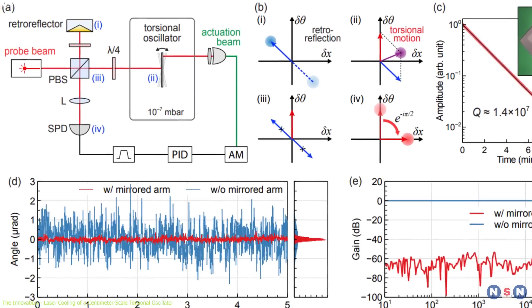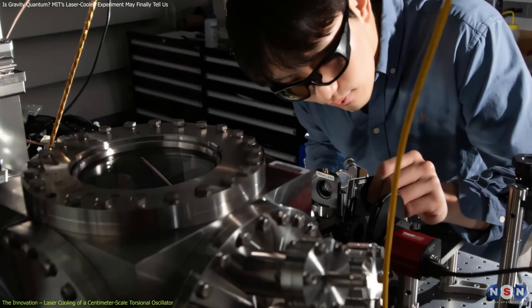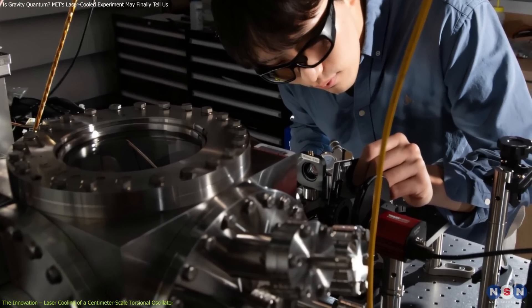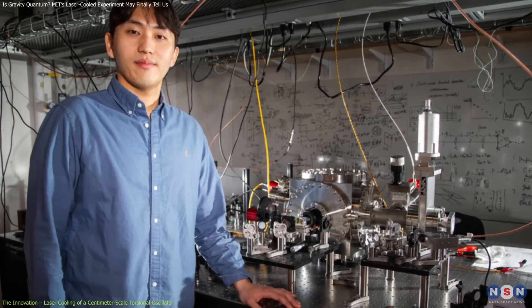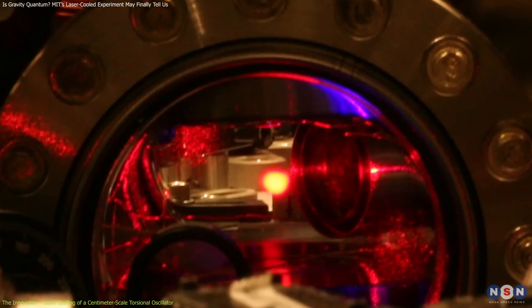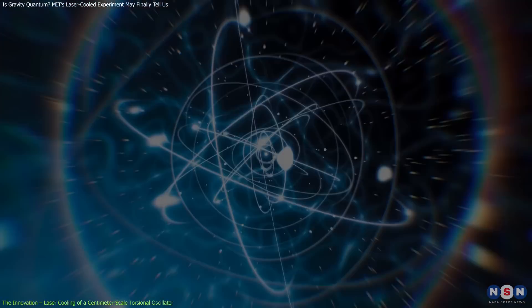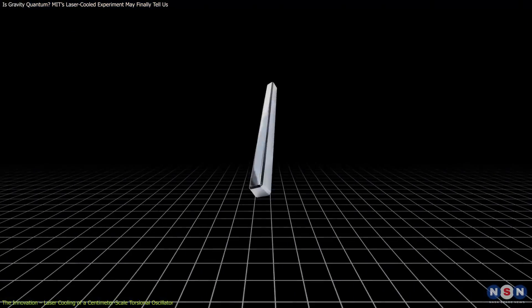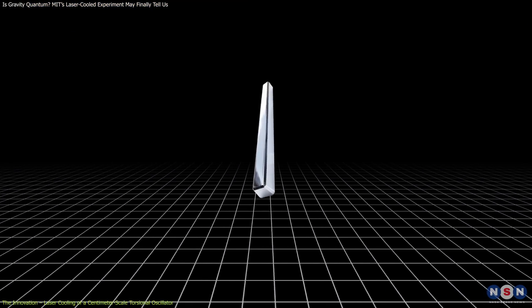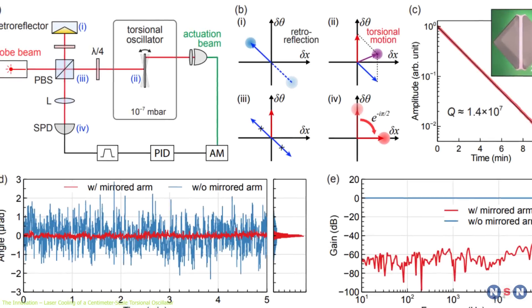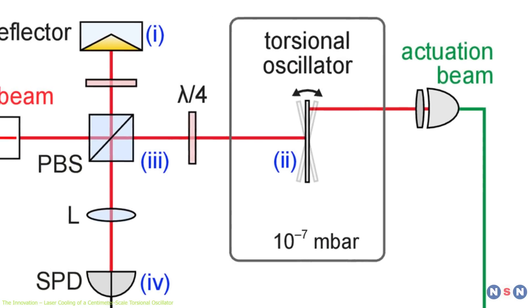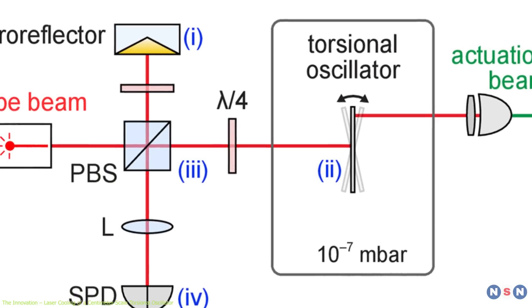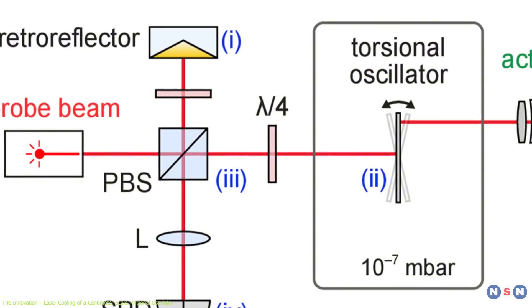What makes the MIT experiment revolutionary is the scale and precision at which they've operated this system. Led by PhD candidate Dongchel Shin, the MIT team applied laser cooling, a technique traditionally reserved for atoms, to this relatively large macroscopic device. This isn't your typical cryogenic setup. Instead, they used a mirrored optical lever to precisely detect and control the oscillator's motion.